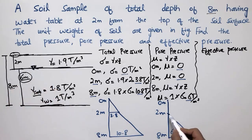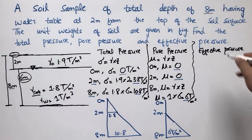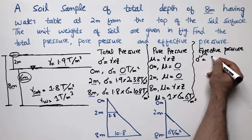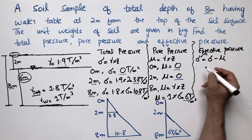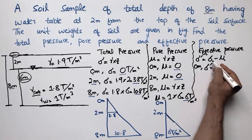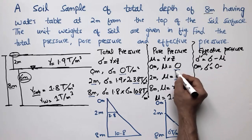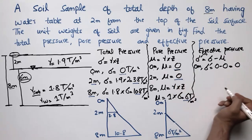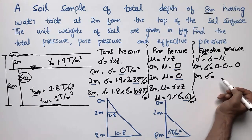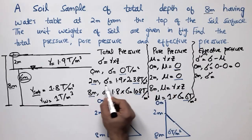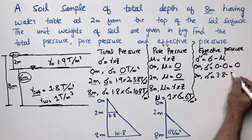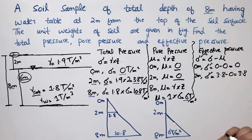Effective pressure, represented by sigma-dash, equals total pressure minus pore water pressure. At 0 meters: 0 minus 0 equals 0 ton per square meter. At 2 meters: sigma-dash equals 3.8 minus 0 (pore water pressure at 2 meters), giving 3.8 ton per square meter.